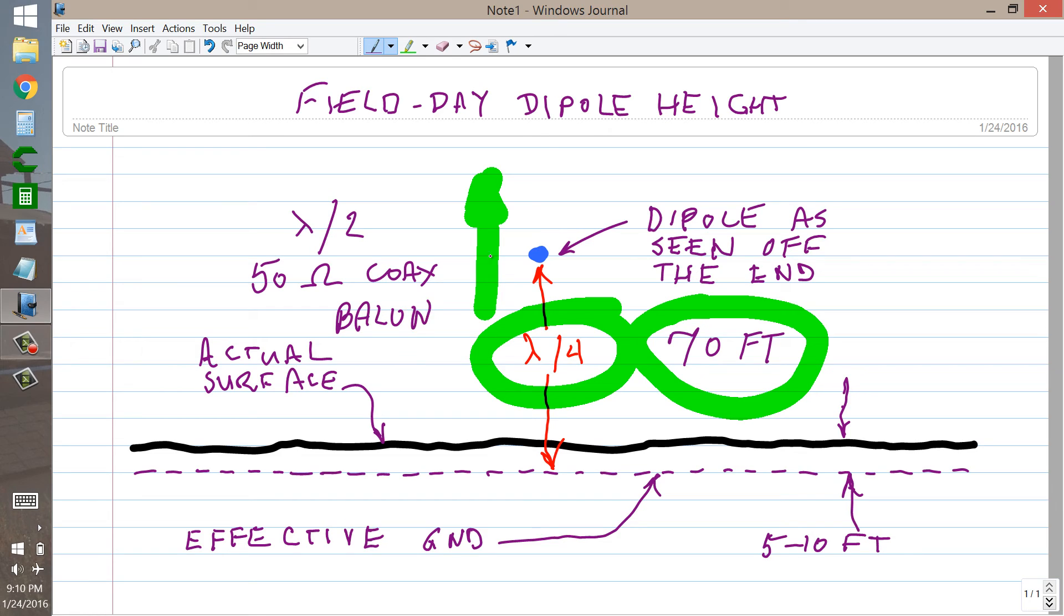It's that simple. 50 ohm coax, half wave dipole, balun at the center, and 70 feet off the ground will get you all the contacts you can possibly get for a simple, practical field day antenna.